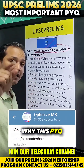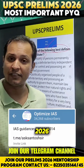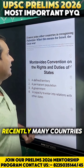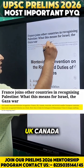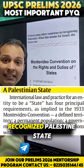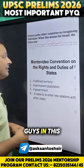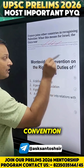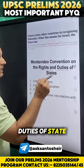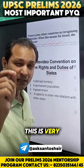First, I will tell you why this PYQ and this concept is important for the 2026 Prelims examination. Recently, many countries like France, UK, Canada, and Australia have recognized the Palestine state. In this context, the Montevideo Convention on rights and duties of states has been in use. This is very, very important.